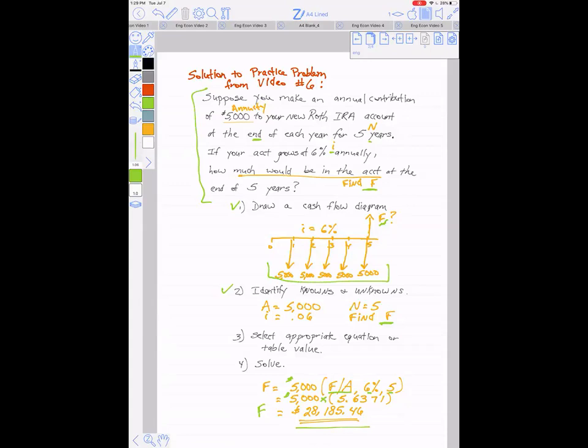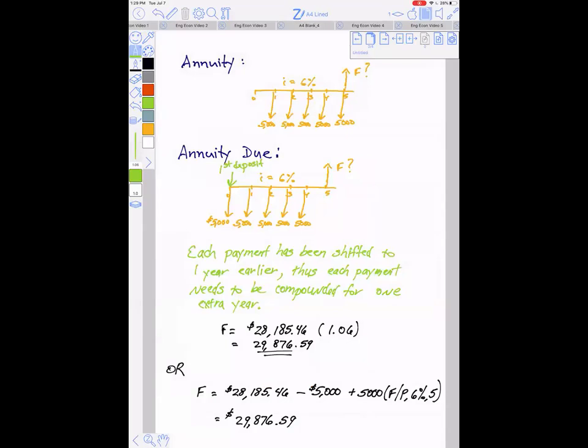Alright, so that is a good practice problem. That's a regular annuity when the payments happen at the end of each year. Let's look now at when the payments happen at the beginning of each year; it's called an annuity due. So here's the exact same cash flow series we just looked at, with payments happening at the end of each year.